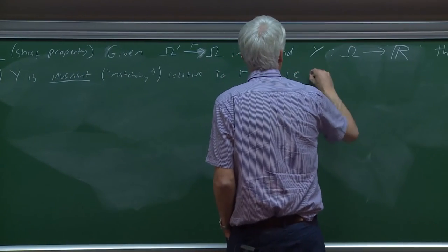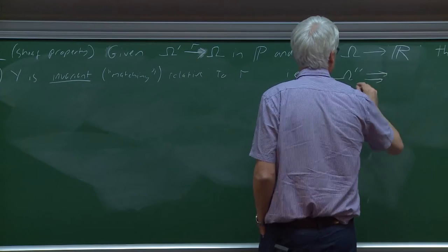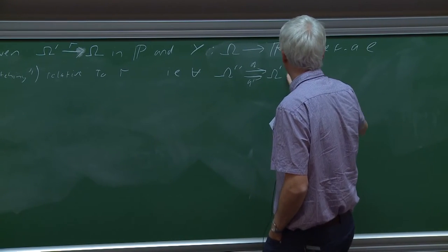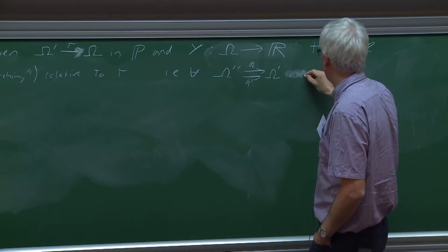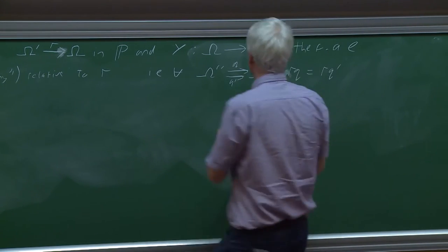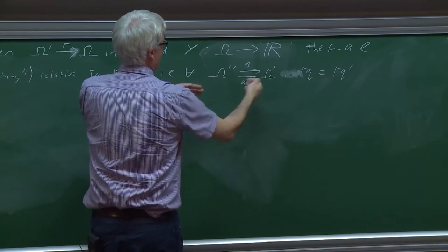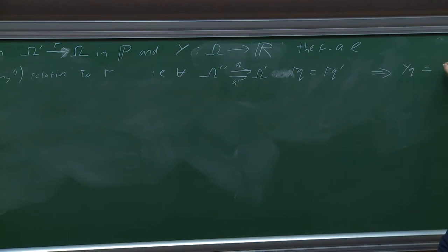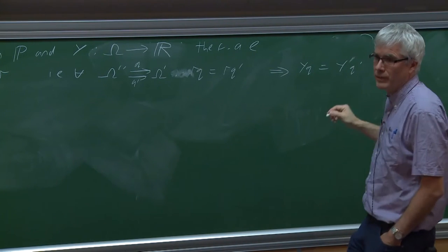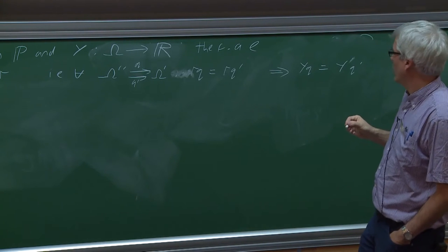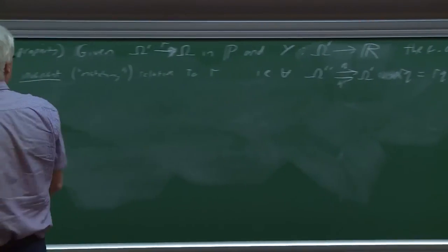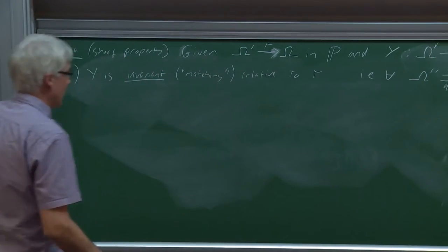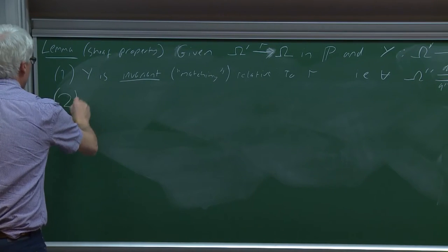So Y being invariant is equivalent to Y being almost surely constant on almost every fiber of r. This uses the concept of regular conditional probability, which exists because we're working with a nice category of probability spaces. Intuitively, Y is somehow constant on fibers over r. The maps in the category preserve measure, and the random variables themselves are just real measurable functions considered almost everywhere.